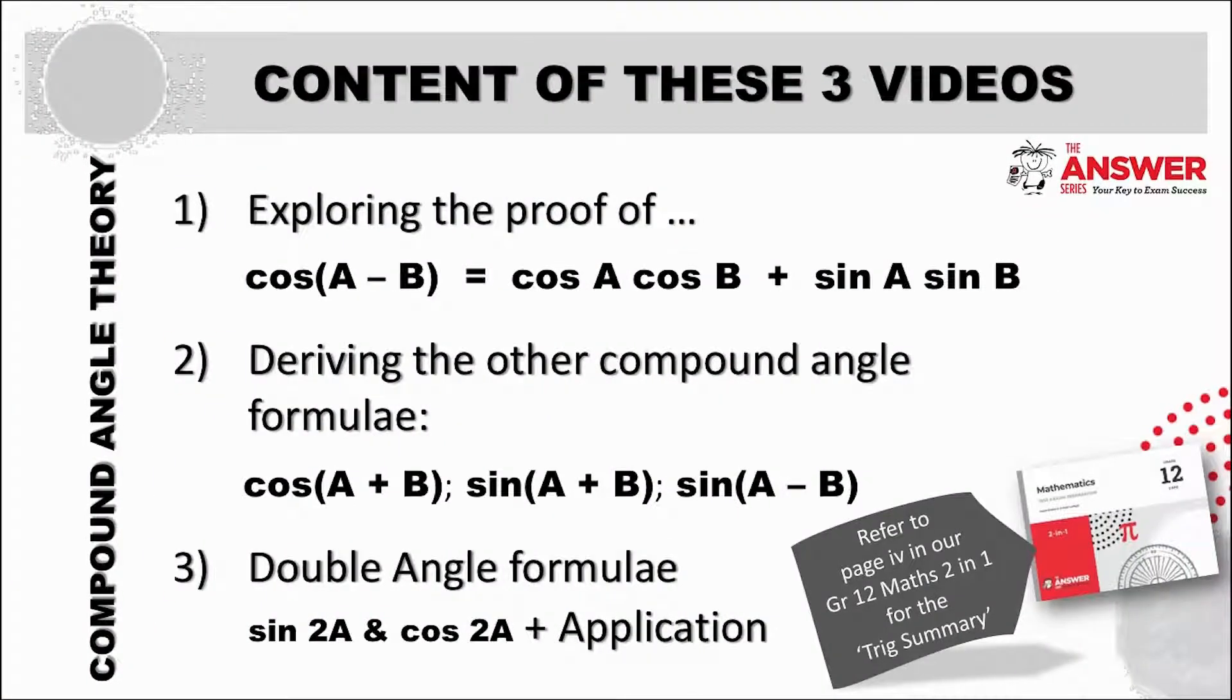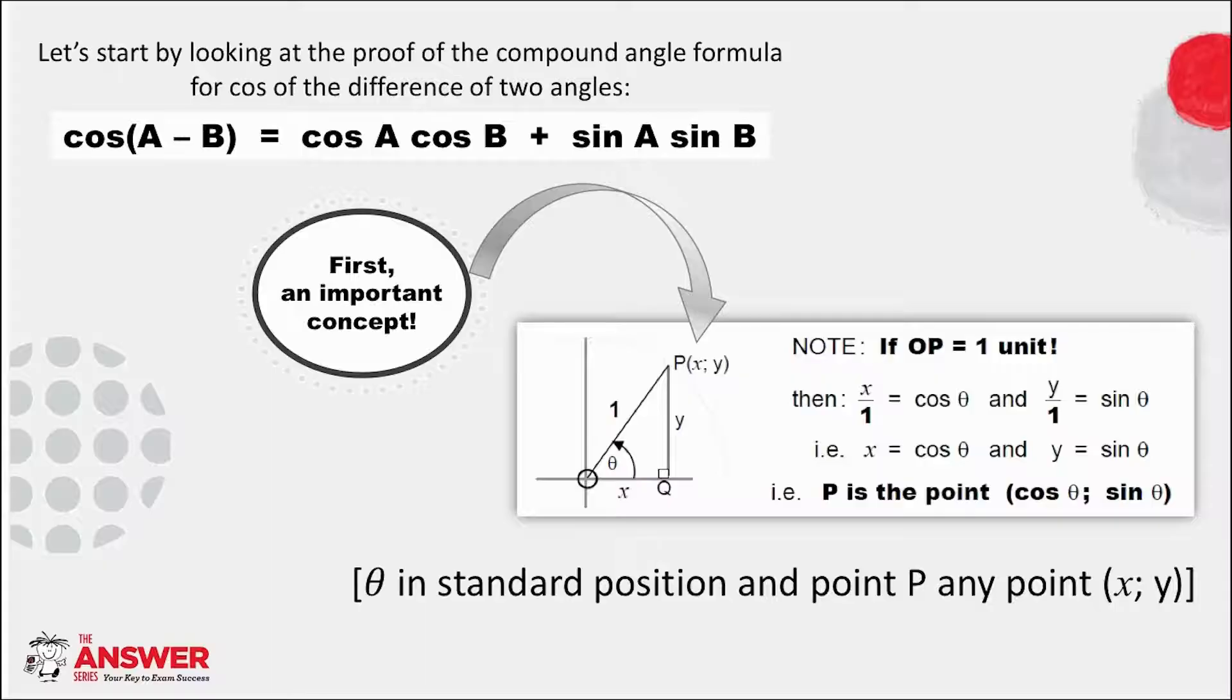This will be a trio of videos and in this first one we will explore the proof of cos(A - B). Before we begin with the proof, let's have a look first at a concept that is true for all points on a circle. The coordinates can, in fact, be expressed as trig ratios. Let's go and see how.